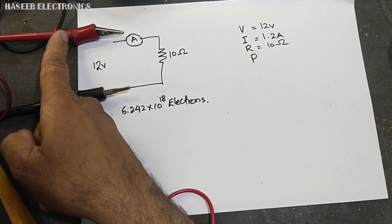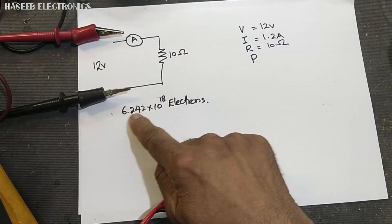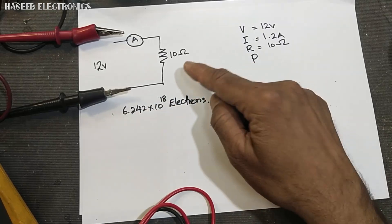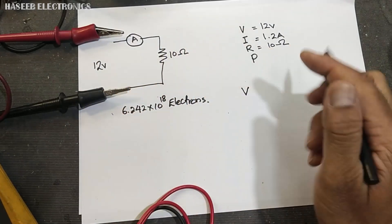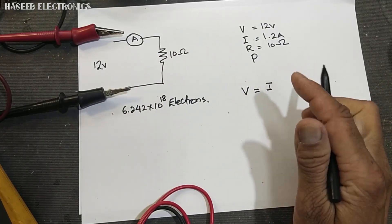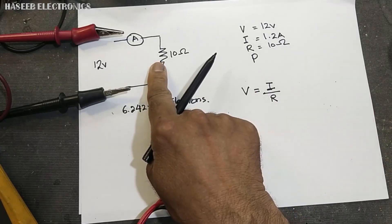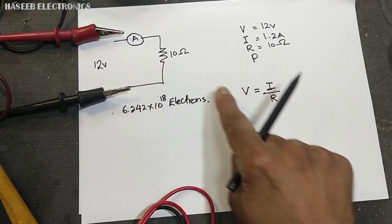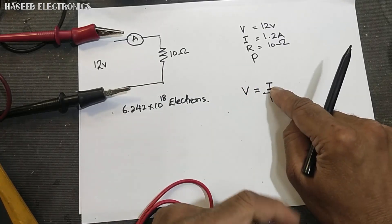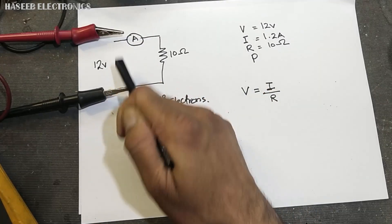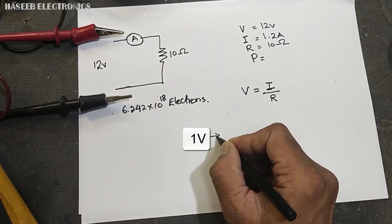If we apply one volt to a conductor and that conductor allows this number of electrons to flow in one second, the resistance is called one ohm. Now, if we increase the voltage the current will increase, and if we decrease the resistance the current will also increase. Voltage and resistance are inversely proportional to current; voltage and current are directly proportional.